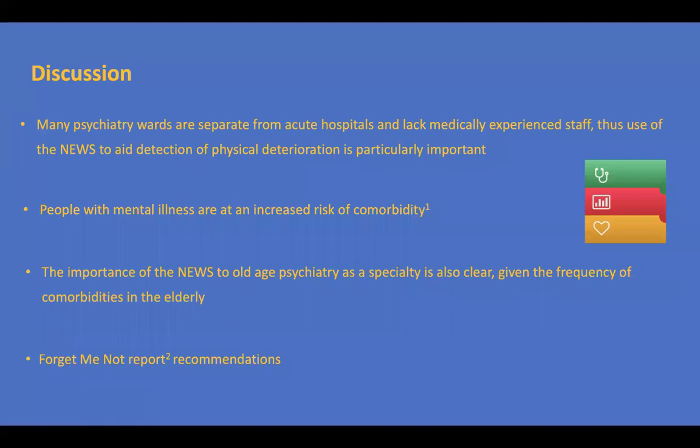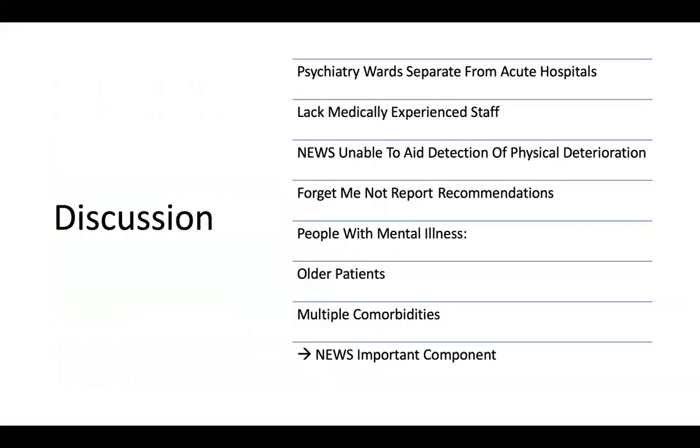This slide, again, busy. Simplify it again. Put it into simple points. Everything has been now broken down into points. And in this one, in this discussion, it was that psychiatric wards are separate from acute hospital. They're away from acute hospitals. They lack medically experienced staff who can use NEWS. NEWS is a national early warning system. So there was a forget-me-not report recommendation which said that people with mental illness, these are older patients who have multiple comorbidities. And national early warning system should be an important component of their assessment and care.